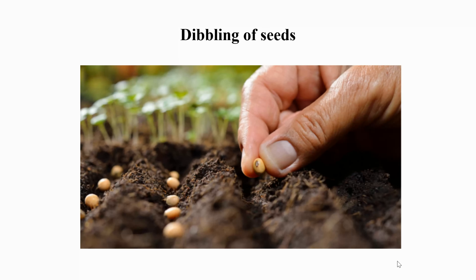The third technique is dibbling, also called hill planting. This is usually practiced along mountain slopes or where ploughing and harrowing are difficult. Use a long wooden or bamboo pole with a metal scoop attached at the end to dig holes, then drop the seeds into the holes and cover them with soil.